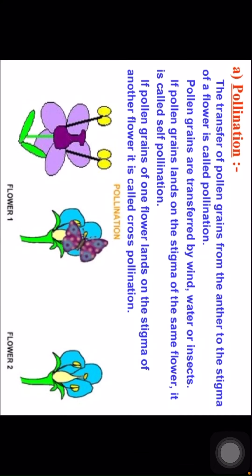Pollination: the transfer of pollen grains from the anther to the stigma of a flower is called pollination. Pollen grains are transferred by wind, water or insects. If pollen grains land on the stigma of the same flower it is called self-pollination. If pollen grains of one flower land on the stigma of another flower it is called cross-pollination.